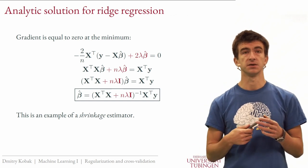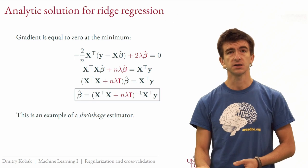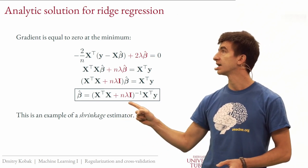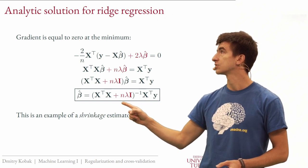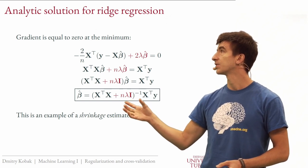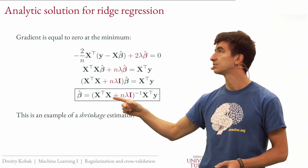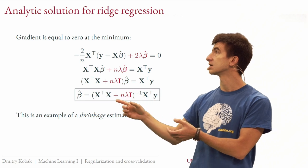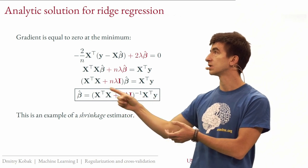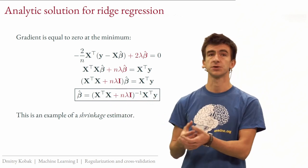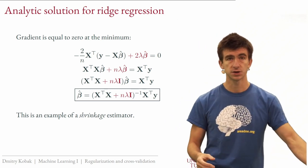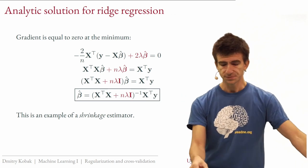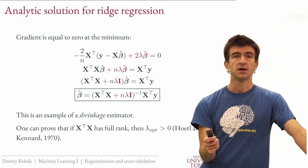This is also called a shrinkage estimator because you are adding a positive quantity — lambda and n are always positive — to the X^T X matrix before inverting, which makes coefficients smaller. Shrinkage is essentially another term for regularization: all coefficients will shrink, which is exactly what we wanted.